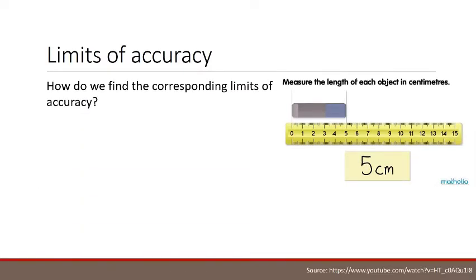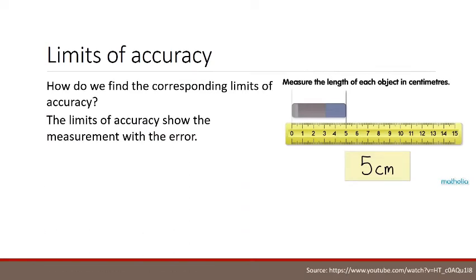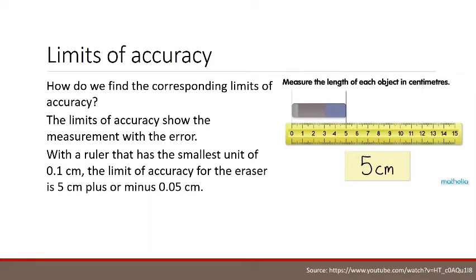Well, how do we find the corresponding limits of accuracy? The limits of accuracy show the measurement with the error. With the ruler that has the smallest unit of 0.1 centimeters, the limit of accuracy for the eraser is 5 centimeters plus or minus 0.05 centimeters.